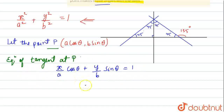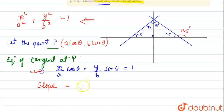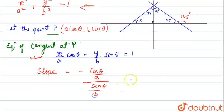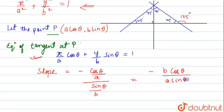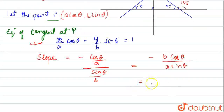This tangent may have slope tan 45° or tan 135°, giving two possibilities. The slope of the tangent from this equation is: (−cosθ/a) ÷ (sinθ/b), which simplifies to −b cosθ / (a sinθ).